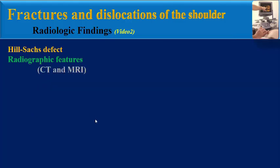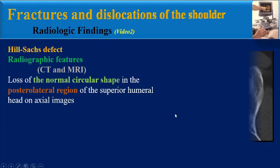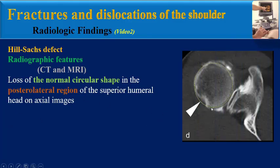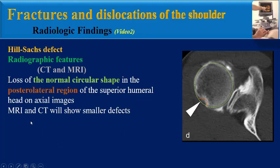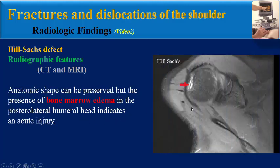On CT and MRI, we can see loss of the normal circular shape in the posterolateral margin of the superior humeral head on axial images. MRI and CT will show smaller defects in comparison with plain radiography. The normal shape can be preserved, but the presence of bone marrow edema in the posterolateral humeral head indicates an acute injury or Heel Socks lesion.